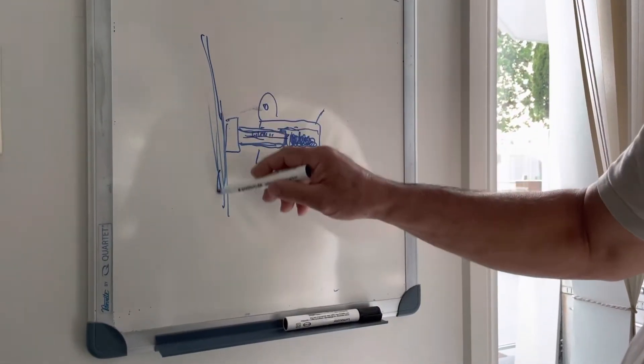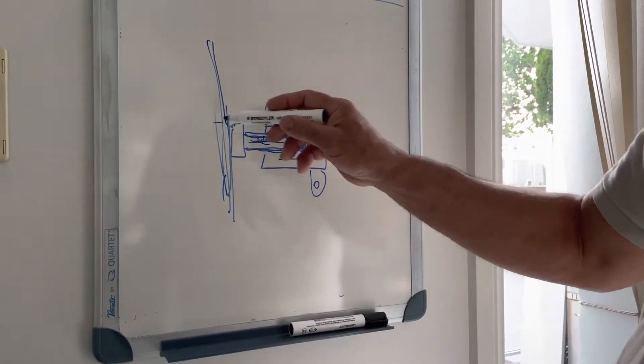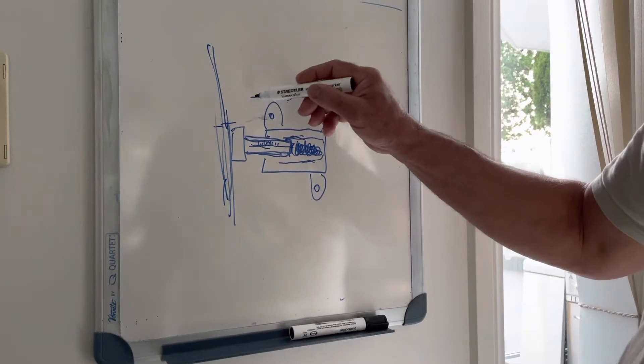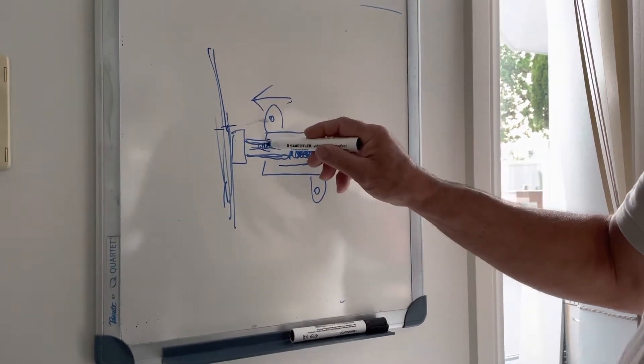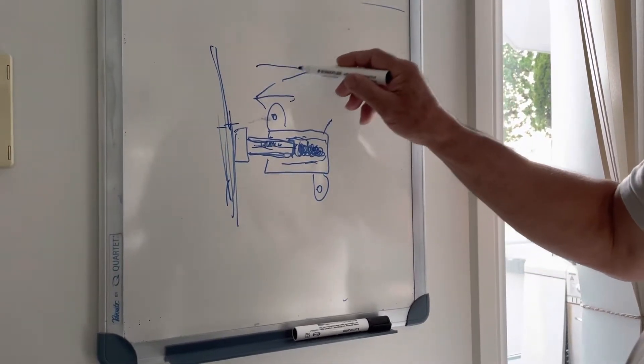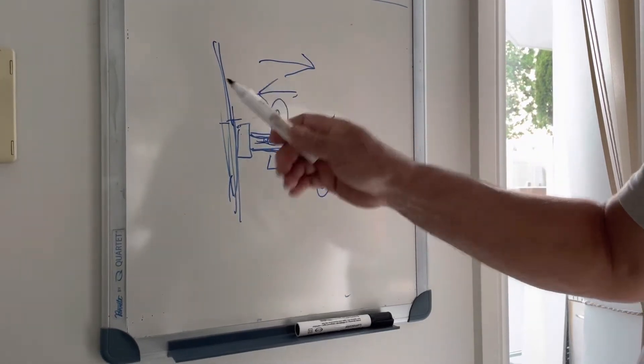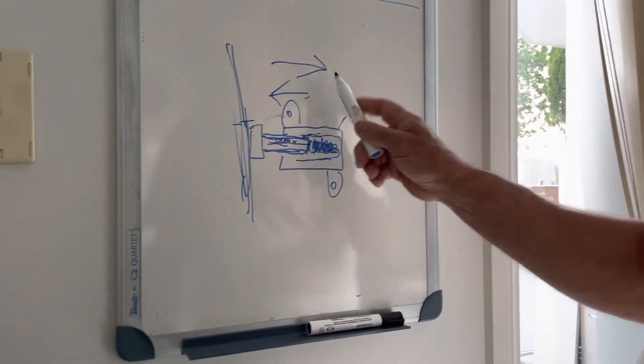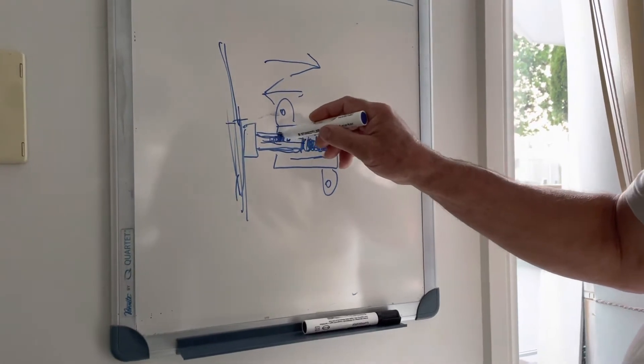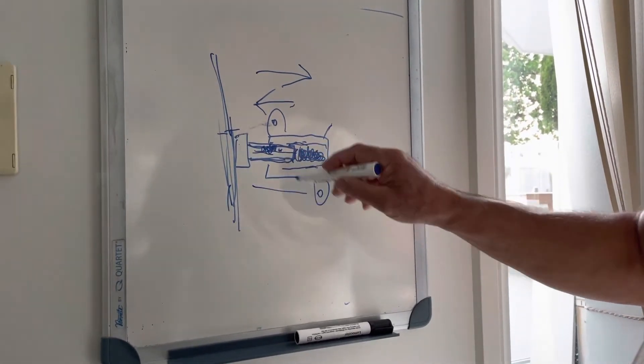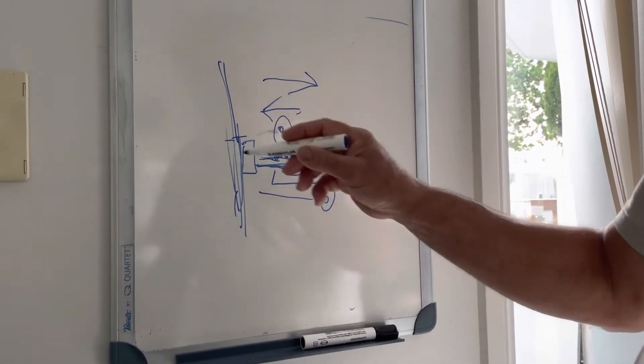There is a ratchet mechanism here to stop it from traveling back and slacking the chain off, and the chain will flick. This mechanism can fail and the piston pushes back too far, and the chain's got too much slack.